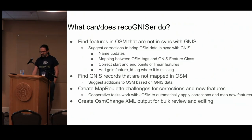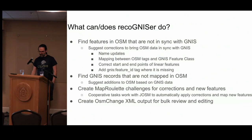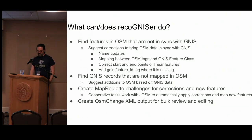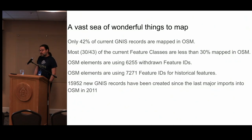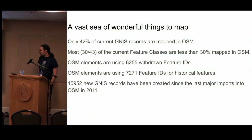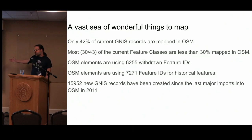The key outputs are Map Roulette challenges and change files in XML formats so you can load them into JOSM on the desktop editor or directly into Map Roulette — because when we need a human, we need a human, and we leverage the tools of the community to do that. 42% of the current GNIS records are mapped in OSM, which means there's a lot of work still to do. Notably, there are 6,000 elements that have withdrawn feature IDs — GNIS decided those never existed, but they're still in OpenStreetMap. We also have 7,000 that are historical — they were there, but aren't anymore — and we need to go clean all those up too.